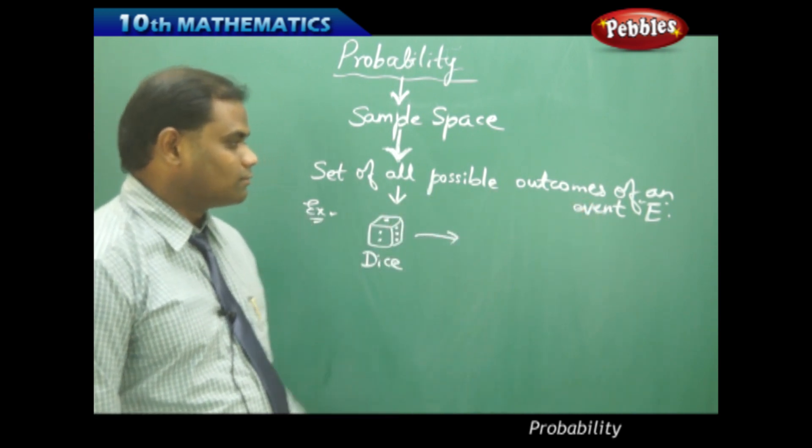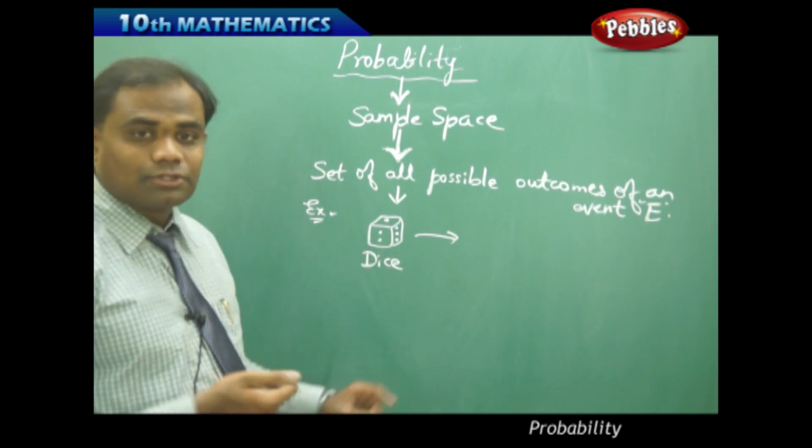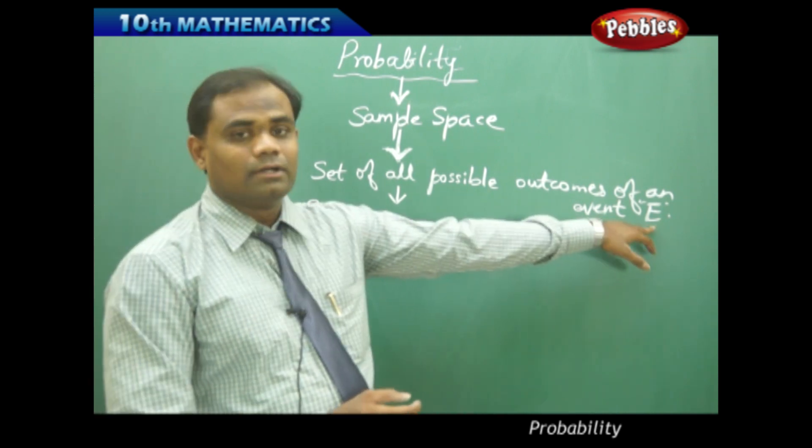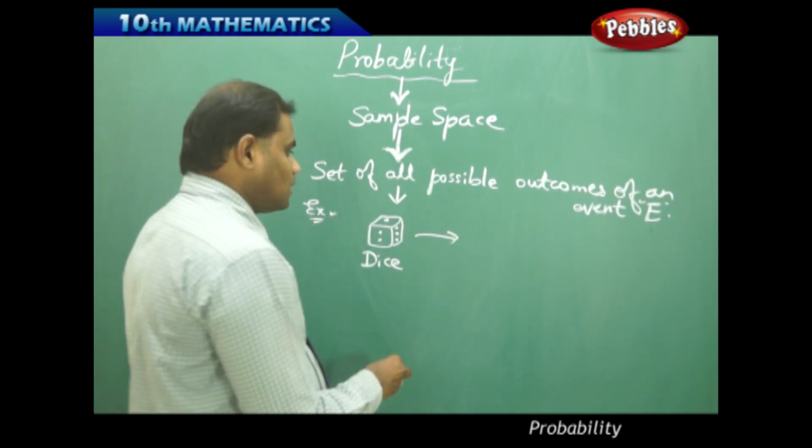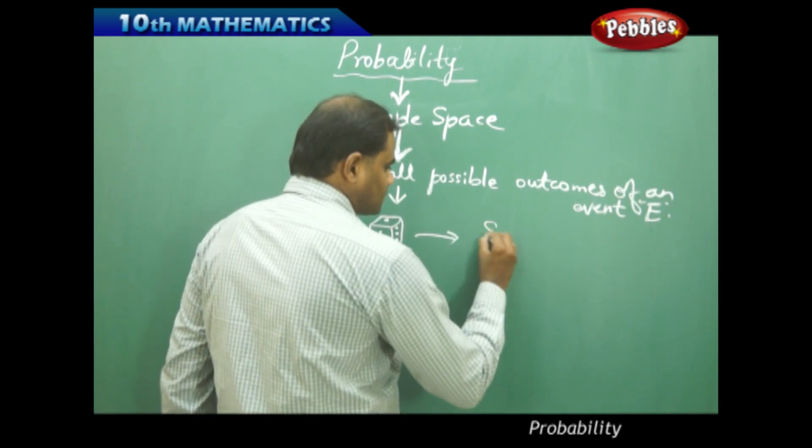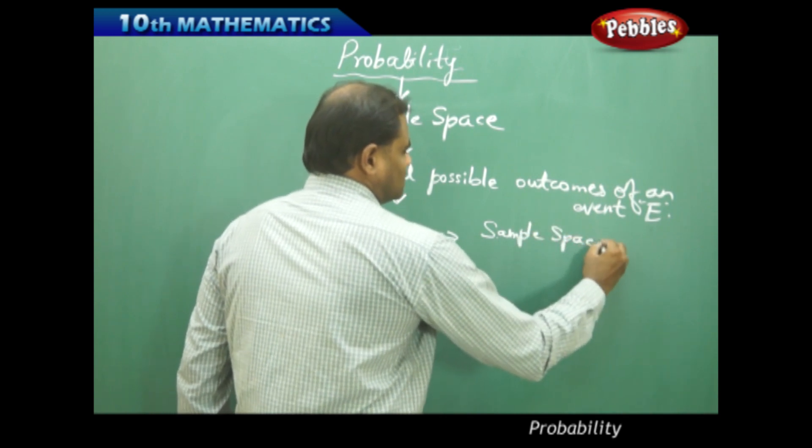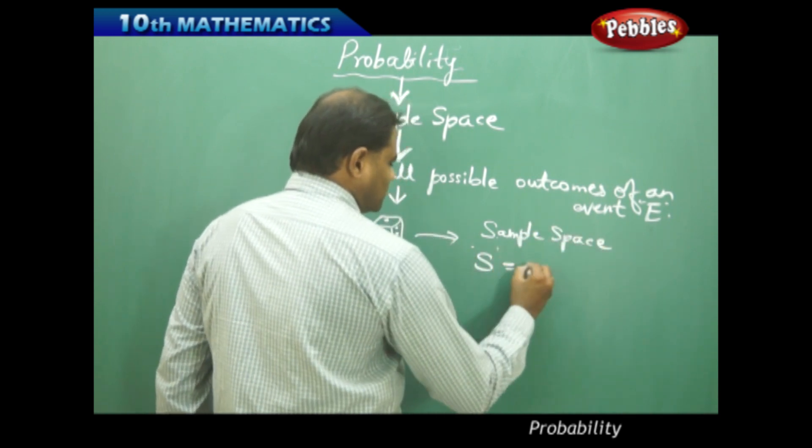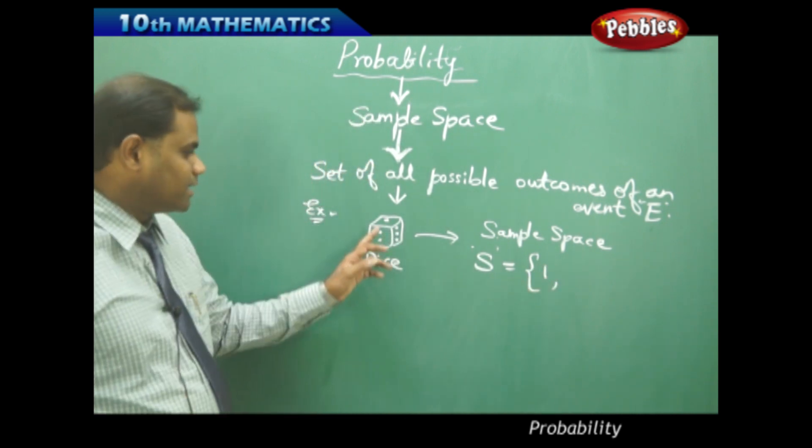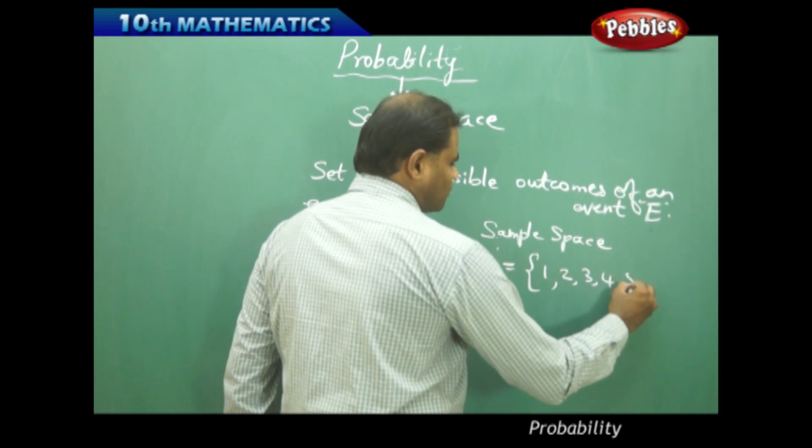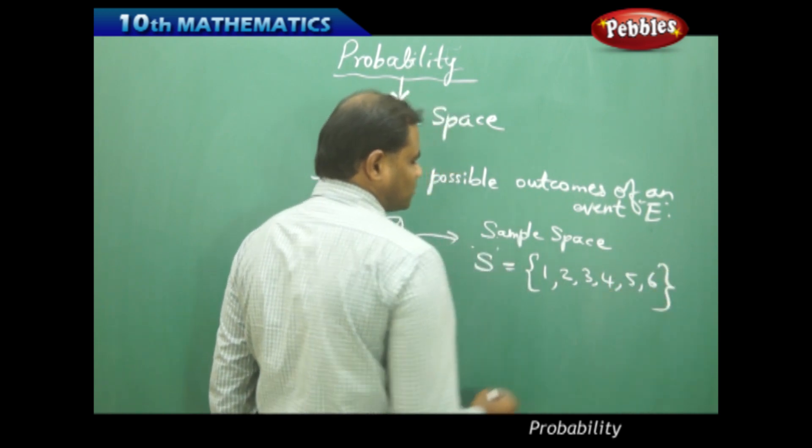the set of all possible outcomes of the event E, here being throwing of a dice while playing a game, is the event E. Let's see what are the possible outcomes. The sample space, denoted by S for this particular problem, is the first possibility: I may get a one, then two, three, four, five, or six when I throw a die.